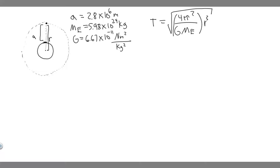We have G and the mass of the Earth, but we need the radius. Keep in mind, the radius is measured from the center of the planet. They give us the altitude, which is the distance from the surface, but we need the full radius R. So we need to add the radius of the Earth to the altitude. The radius of the Earth is 6.38 times 10 to the 6 meters.